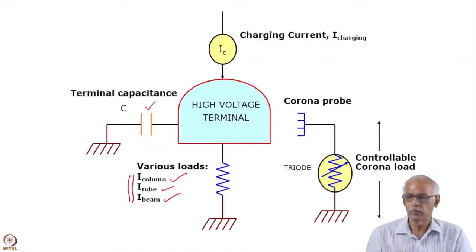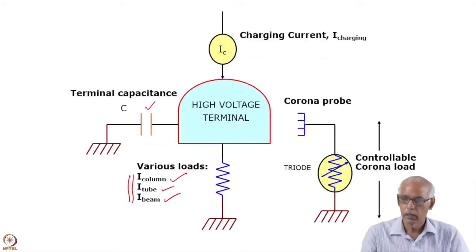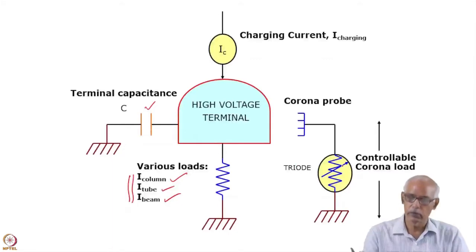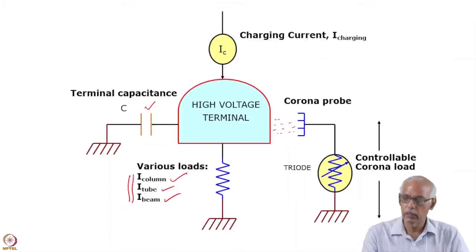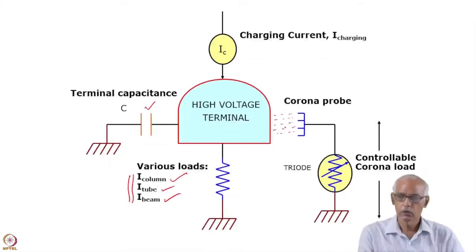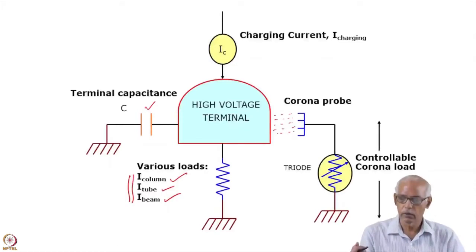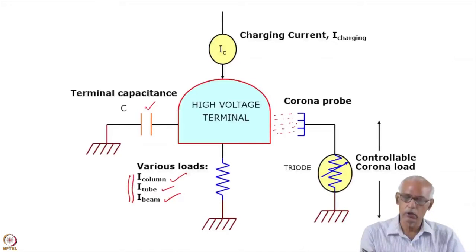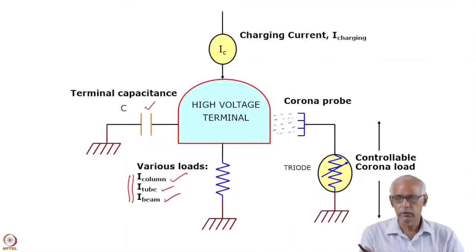For the corona stabilization system, this is basically a triode which will be explained later. Between the high voltage and this, there is a corona formation with a constant amount of current flowing continuously. We try to modulate this through the feedback system. This is a sort of constant corona load all the time, and these are some of the loads which have to be taken into account.